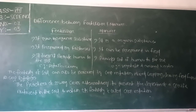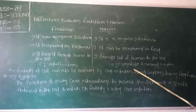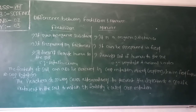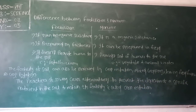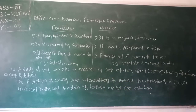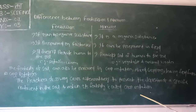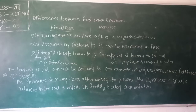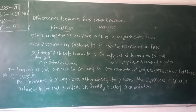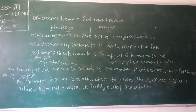The fertility of soil can also be increased by three processes: crop rotation, mixed cropping, and leaving field fallow. Crop rotation is the practice of growing crops alternately to prevent the depletion of specific nutrients in the soil and retain its fertility. Each crop has its own requirement of nutrients. If the same crop is grown in a field year after year, it would make the soil barren in a few years. To avoid this, farmers alternate their crops, preventing the soil from becoming deficient in any one particular nutrient.